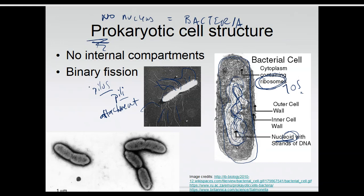How prokaryotes reproduce is through a process called binary fission, which is a lot like mitosis — how cells divide from freshman bio. But since there's no nucleus, there's no mitosis. The process by which prokaryotic cells divide is called binary fission, which is easy to remember: bi means two, fission means split. The cells are splitting into two — binary fission.